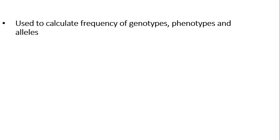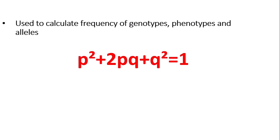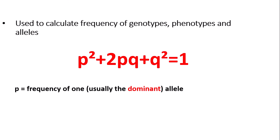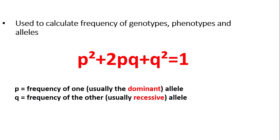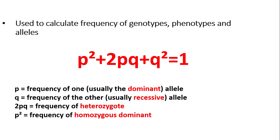The Hardy-Weinberg equation is used to calculate the frequency of genotypes, phenotypes, and alleles. The equation is: p² + 2pq + q² = 1, where 1 represents 100% of the population. P equals the frequency of one allele, usually the dominant allele. Q means the frequency of the other allele, usually the recessive allele. 2pq represents the frequency of heterozygotes. P² means the frequency of homozygous dominant individuals, and q² means the frequency of homozygous recessive individuals.